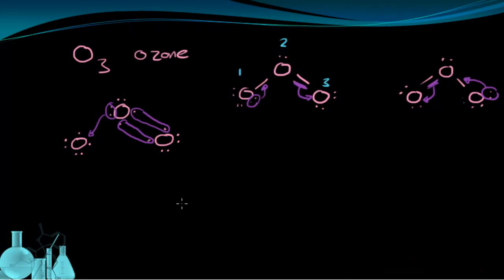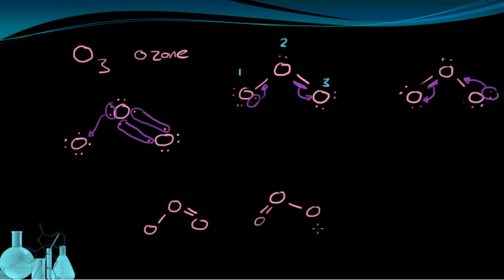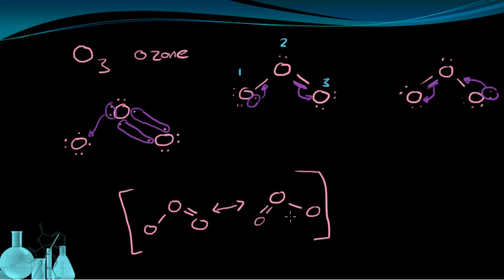These two states are called resonance structures. One version has a single bond on one side and a double bond on the other. The other option is to have the double bond on the first oxygen and a single bond to the third oxygen. So here are the two resonance structures, and we put a double-headed arrow between them showing that it basically flips back and forth, placed in brackets. These are called the resonance structures for this molecule.